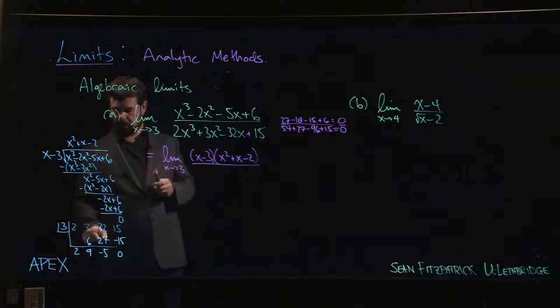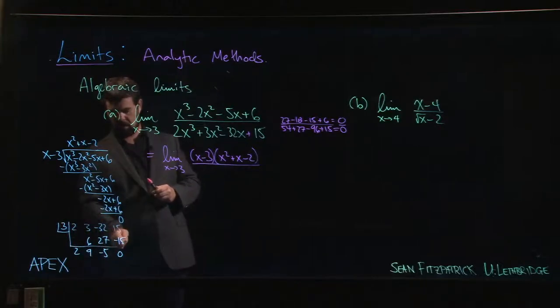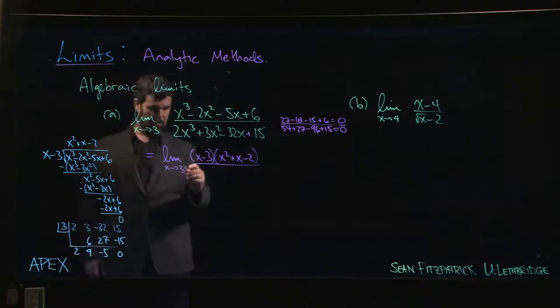Then you put that number in the little box, and then you drop the first coefficient, you multiply, you put it here, you add, you multiply, you put it here, you add, you multiply, you put it here. If you get a zero there, you know there's no remainder, and these numbers give you the coefficients for the remaining polynomial.